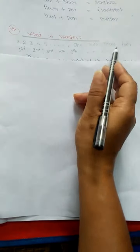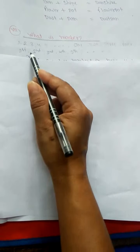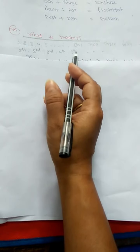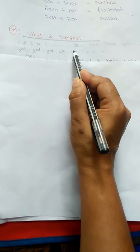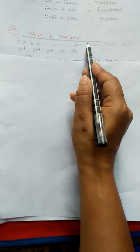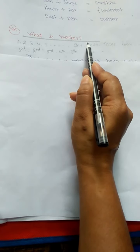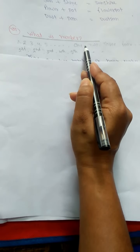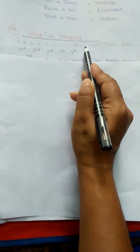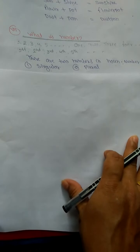We can say numbers in different ways: one, two, three, four — or first, second, third, fourth, fifth. These are called numbers. But when we study grammar, number has a different meaning. In Hindi grammar you learned four types of number, but here you are going to learn two: singular and plural. There are two types of number — first, singular; second, plural.